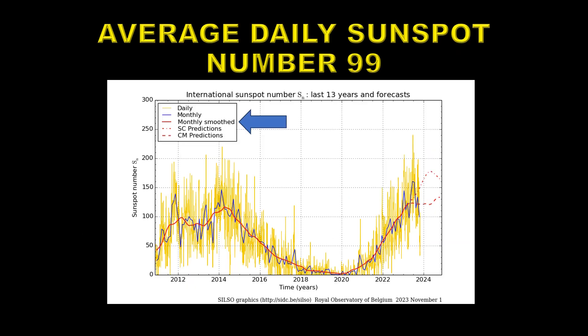Here are the sunspot numbers we were working with. The daily sunspot numbers are marked in yellow, and you can see there's a low point very recently — that was the low point in the month of October. The blue line is the monthly average, and as I said, that's 99 for this month. The most important thing here is the smooth sunspot number, which is the solid red line.